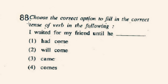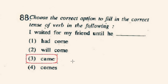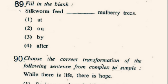Question number 88: 'I waited for my friend until he ___.' The correct option is 3rd: came. The use of past definite tense will be appropriate here.